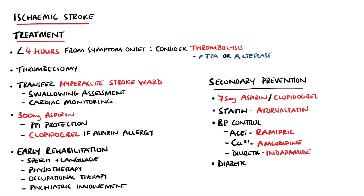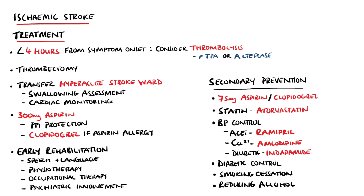Diabetes or hyperglycemia will also need to be controlled, as well as other modifiable risk factors such as cessation of smoking and reducing alcohol intake. Anticoagulation can be used in some patients, such as those with atrial fibrillation or recurrent pulmonary embolism.